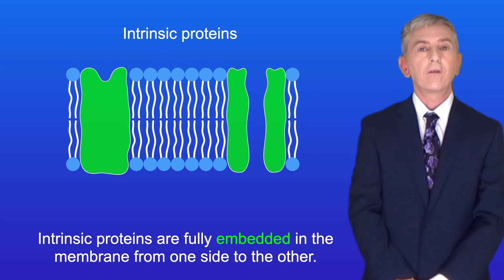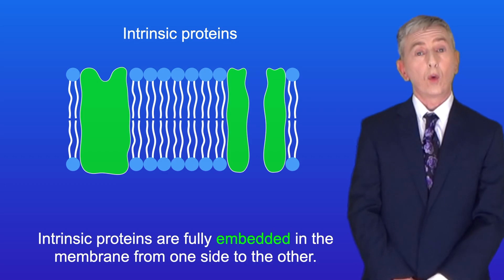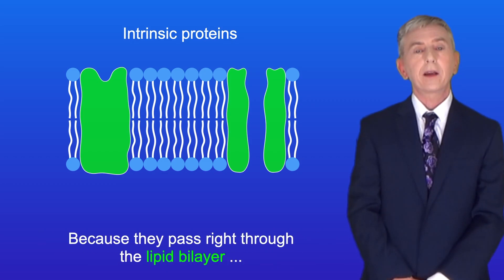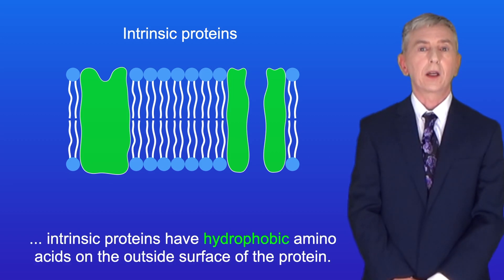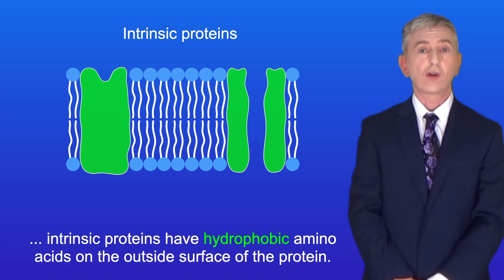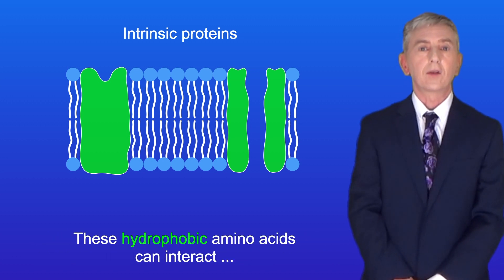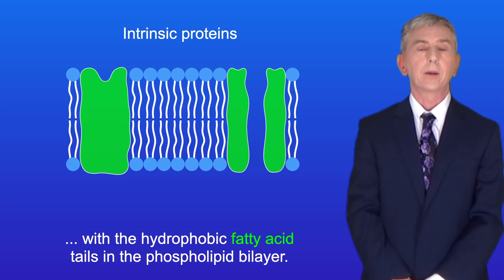Intrinsic proteins are fully embedded in the membrane from one side to the other. Because they pass right through the lipid bilayer, intrinsic proteins have got hydrophobic amino acids on the outside surface of the protein. These hydrophobic amino acids can interact with the hydrophobic fatty acid tails in the phospholipid bilayer.